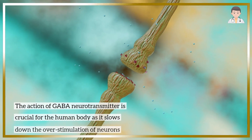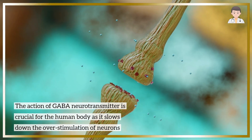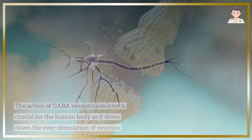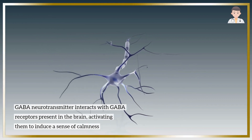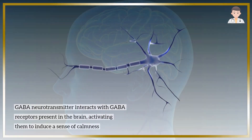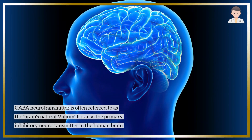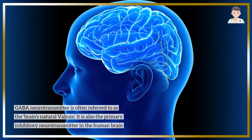The action of GABA is crucial for the human body as it slows down the overstimulation of neurons. GABA interacts with GABA receptors present in the brain, activating them to induce a sense of calmness. GABA is often referred to as the brain's natural valium and is the primary inhibitory neurotransmitter in the human brain.